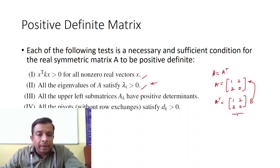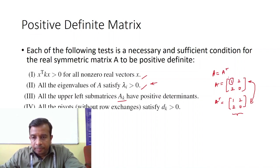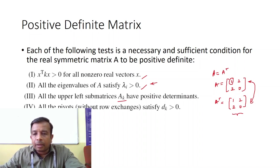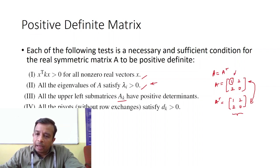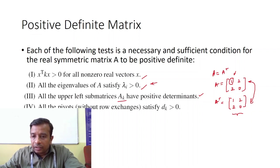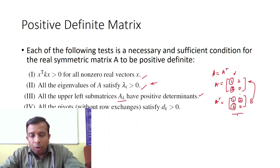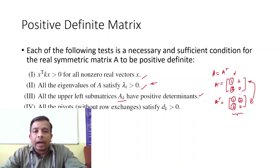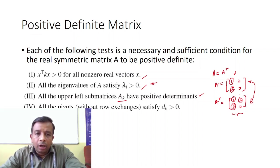Next, all the upper-left sub-matrices A_k should have a positive determinant. Since it is only a 2×2 matrix, the upper-left sub-matrix will be only one element, and if it is positive then the third condition is met. The fourth condition is that all the pivots without row exchanges satisfy D_k greater than 0. All four tests must be met to identify if a given real symmetric matrix A is positive definite.